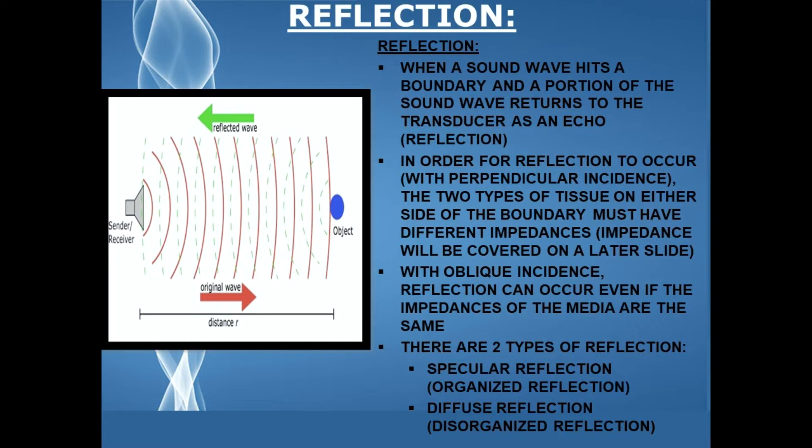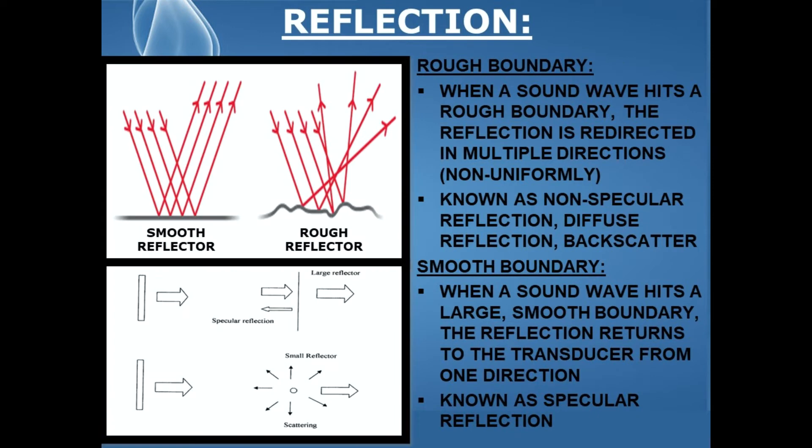With oblique incidence, reflection can occur even if the impedances of the media are the same, and there are two types of reflection: specular reflection, which is an organized type of reflection, and diffuse reflection, which is a disorganized reflection.